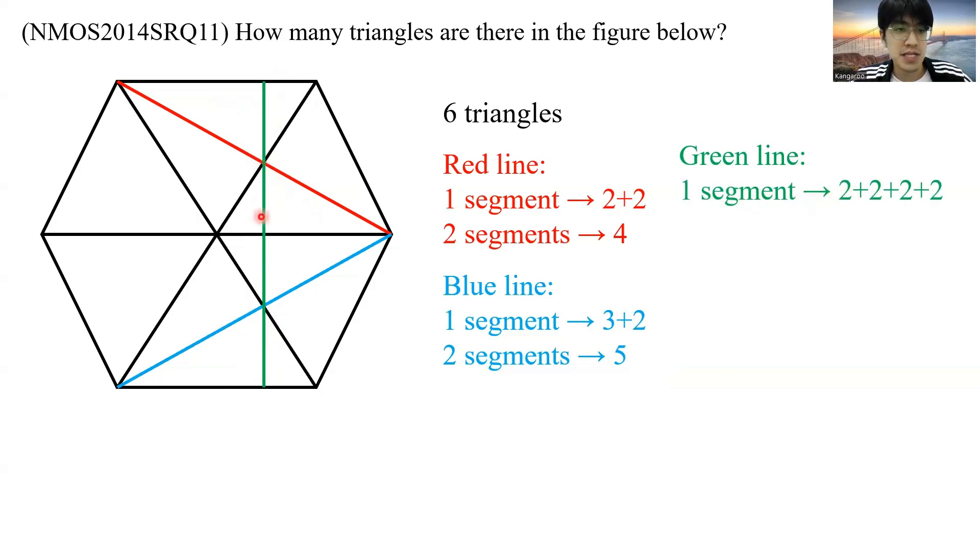one on the left, one on the right, two, one on the left, one on the right, two. So these are the triangles that we can obtain by splitting this green line into different unique segments.